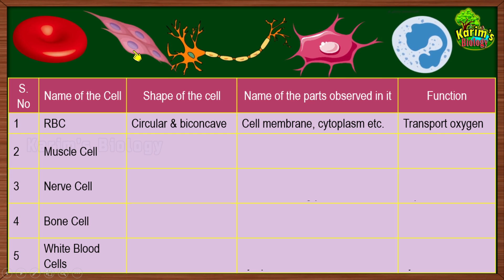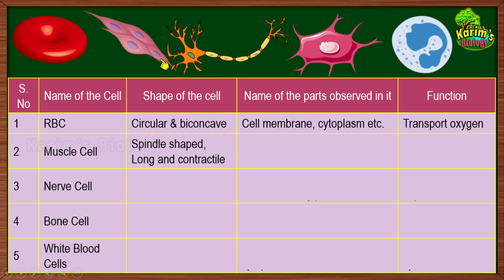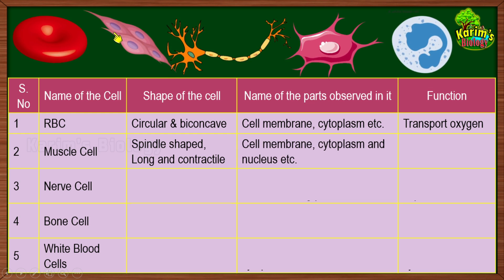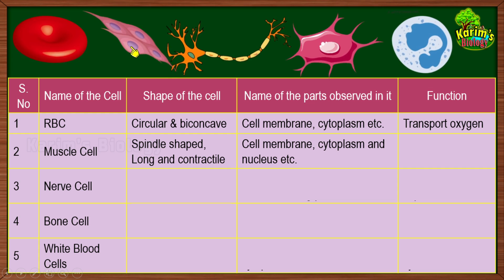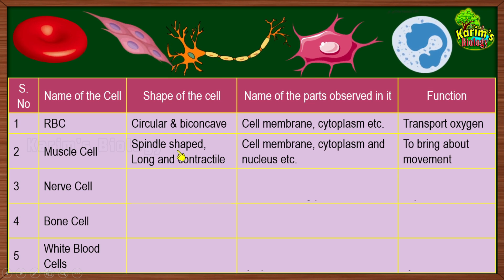Now come to the second cell — muscle cells. They are present in your muscles. What is the shape? They are thin on either side, giving the appearance of a spindle, so they are spindle-shaped. They are long and contractile — they can contract and relax, which helps you to move from place to place. The parts include cell membrane, cytoplasm, and a big nucleus. Remember the nucleus is absent in RBC but present in muscle cells. Their function is contractile — they can contract and relax, so movement in your body is brought about by muscle cells.